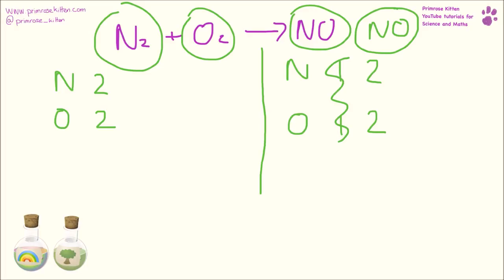Good. Now we have two nitrogens and two oxygens on both sides. Write out the equation neatly, so the examiners are happy that we know what we're talking about. N2 plus O2 goes to 2NO.